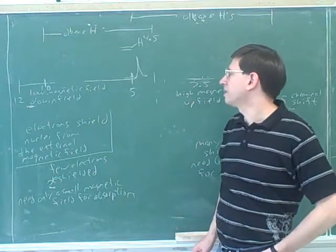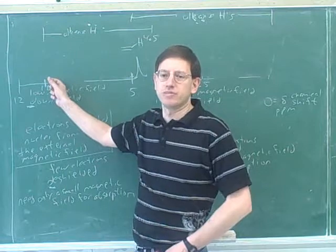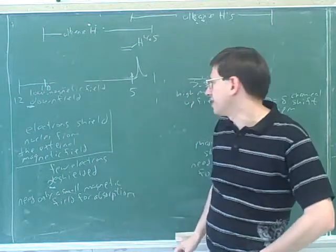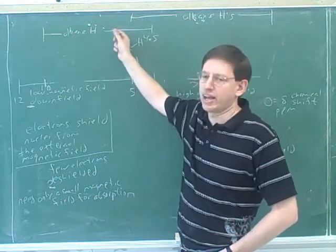And then again, the more electronegative elements there are, and the closer they are to the alkene, the further to the left we would get dragged. But if there's no electronegative elements around, it would start between 4.5 and 5. So this is like the alkene region.